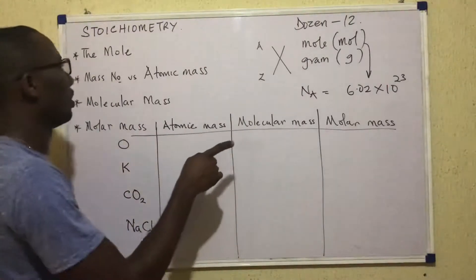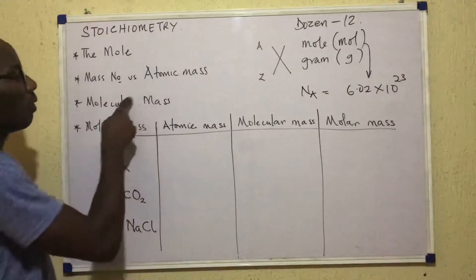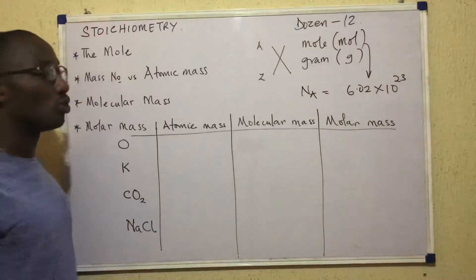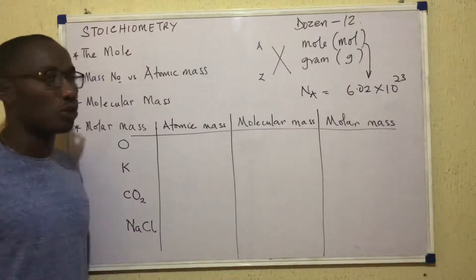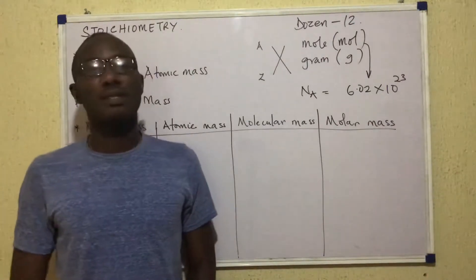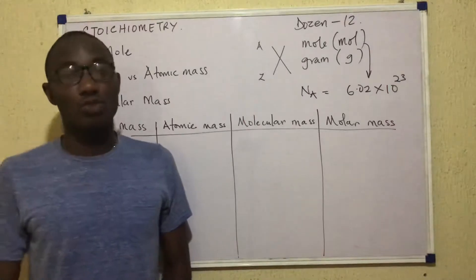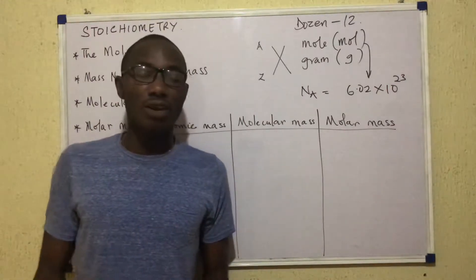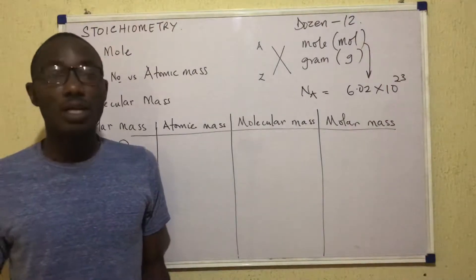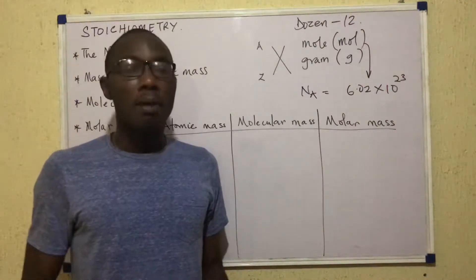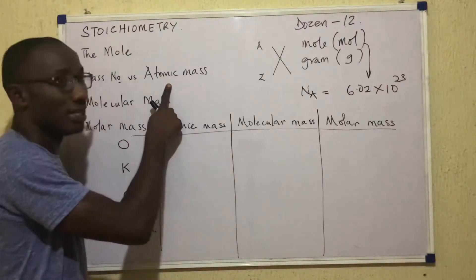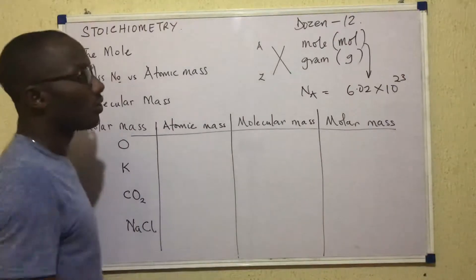Having talked about the meaning of the word mole, there are some small but important distinctions to draw. We need to draw clear dividing lines between mass number and atomic mass. In many situations people say those two terms are interchangeable — that they mean the same thing. Well, not exactly. Mass number is a number, while atomic mass is a mass. Let's see the difference.